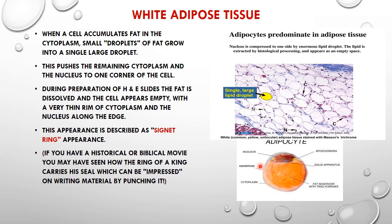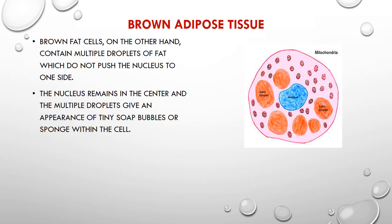These adipocytes have a special appearance called the signet ring appearance. The word 'signet' is derived from 'signature,' a Latin word. It comes from the signing of kings, who used to seal their documents or important things with their ring which had their impression on it. From there it is derived as the signet ring appearance.